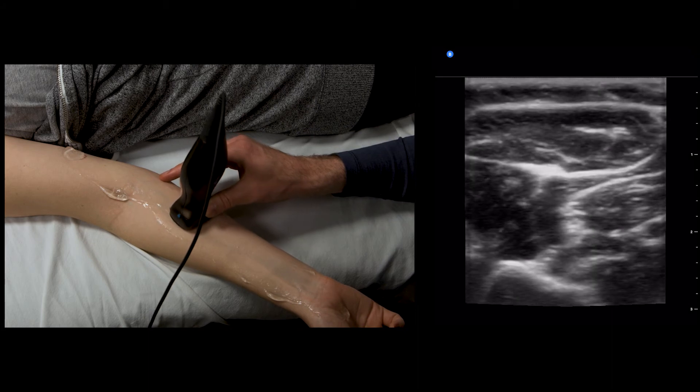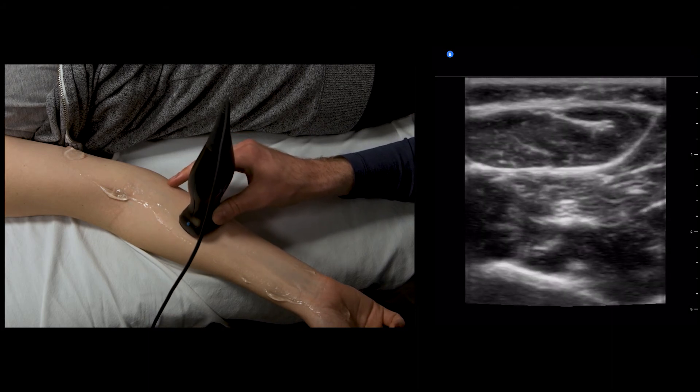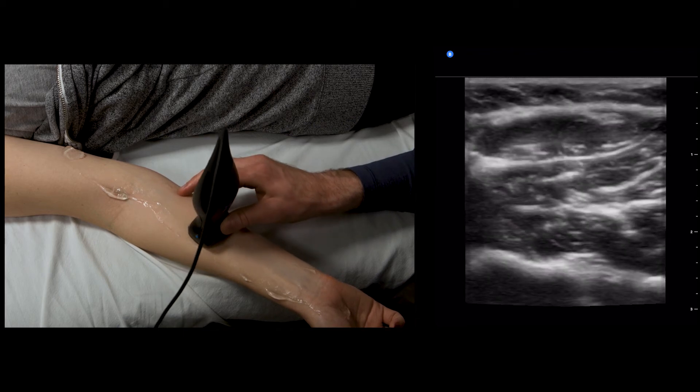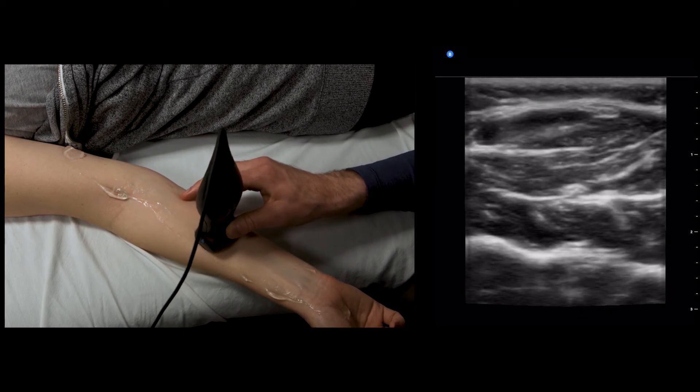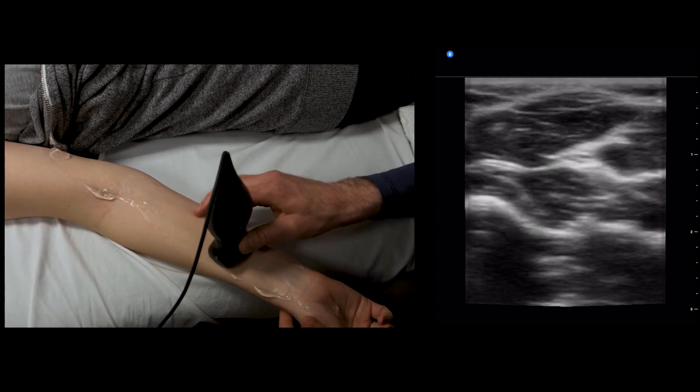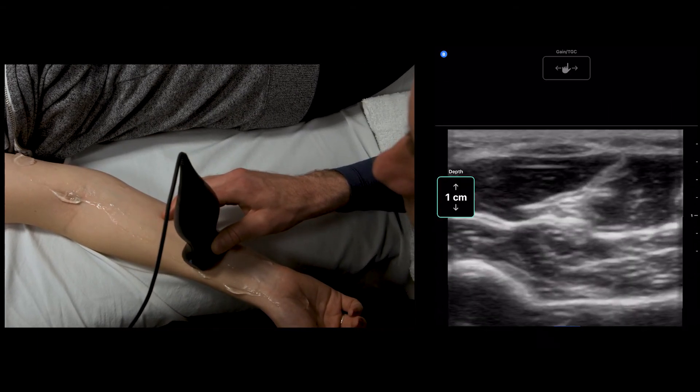And then it rises a little bit to become the defining structure in the forearm between the superficial and deep compartments. It rises superficial again.